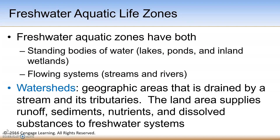Two definitions to know include the word runoff. Runoff is water that flows into surface waters from the adjacent land areas. Surface water is freshwater that flows on or is stored in bodies of water on the surface — in other words, streams, lakes, rivers, ponds, and inland wetlands.